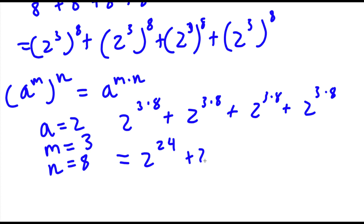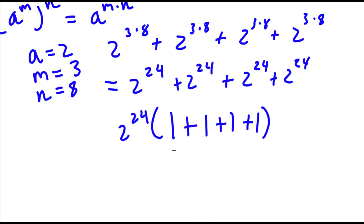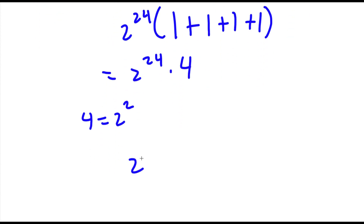So now I have 2 to the power of 24 plus 2 to the power of 24 plus 2 to the power of 24 plus 2 to the power of 24. From this, I'll factor out 2 to the power of 24. So now I have 2 to the power of 24 times 1 plus 1 plus 1 plus 1. If I simplify the parentheses, I get 2 to the power of 24 times 4. Now 4 is the same thing as 2 squared, so I have 2 to the power of 24 times 2 squared.